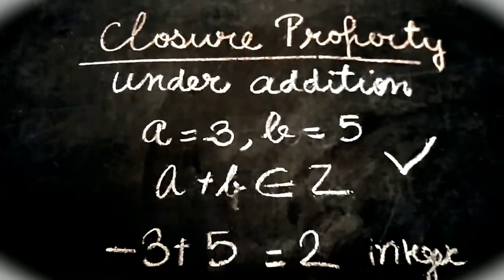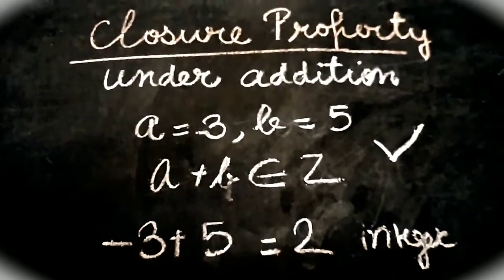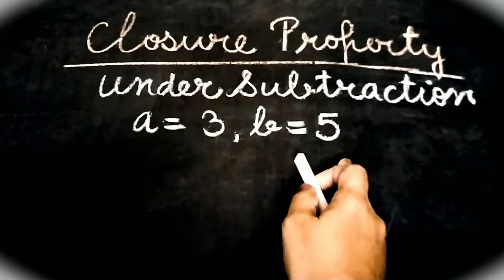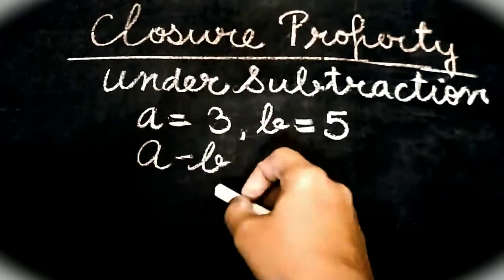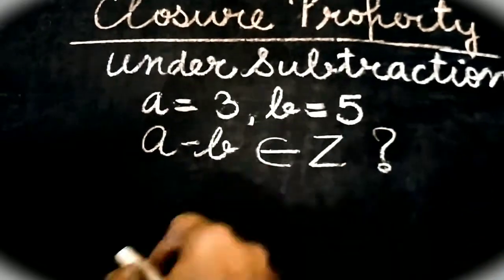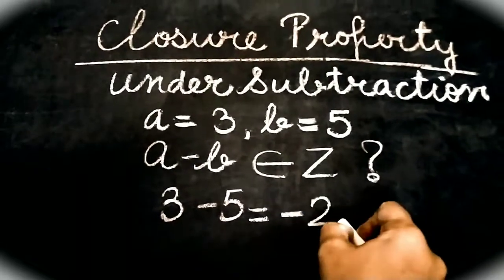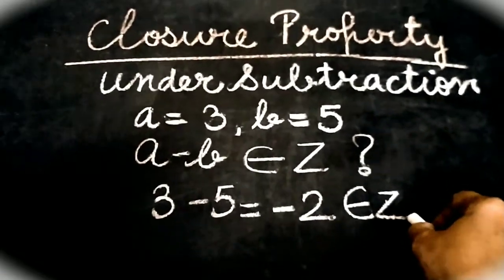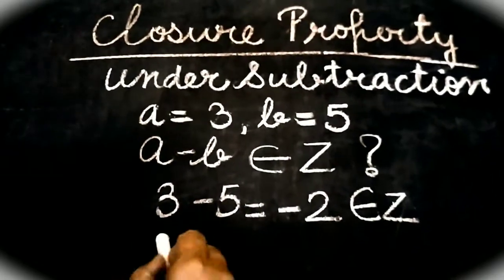So integers are closed under addition. Now let us check whether integers are closed under subtraction or not. Let us take the same numbers again: A is 3, B is 5. Closure property under subtraction means that if I subtract A from B or B from A, the answer should be an integer. So 3 minus 5 will give you minus 2. Now minus 2 is certainly an integer, so by this example it is closed under subtraction.